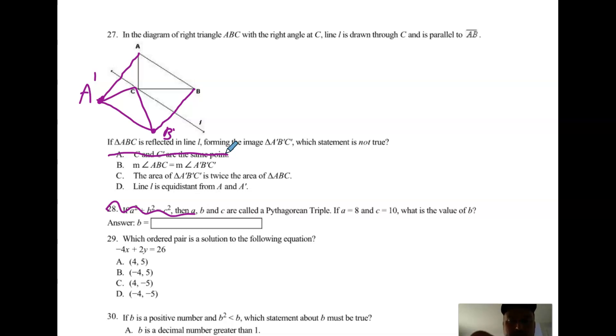So which one's not true? Well are C and C' the same point? Yes they are. C's on the line, it doesn't go anywhere. B: measure of angle ABC equals the measure of angle A'B'C'. Remember angle measure does not change after reflection. It doesn't even change after dilation. Angle measure never changes with these rigid motions or even any of these transformations. So it's not B. C: the area of triangle A'B'C' is twice the area of triangle ABC. Well did they talk about dilations? Did it get bigger or smaller? No it didn't, so it stayed the same. Reflection is a rigid motion, area size does not change. So you should have choice C for that one. And then it says line l is equidistant from A and A'. Well it is - this distance here is the same as this distance here. That's what equidistant means.